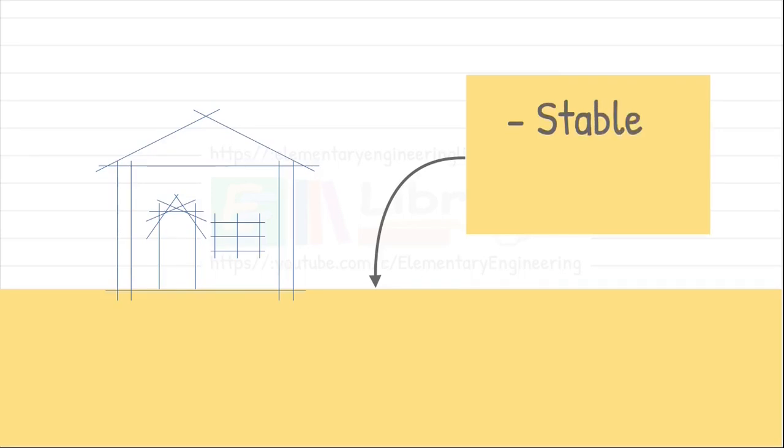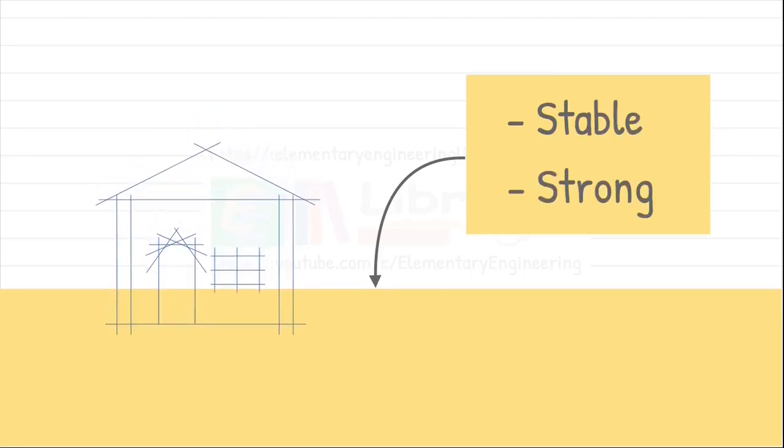Before constructing any structure on the soil, we make the base stable and strong so that it does not settle in large amounts with time. This process of making the soil base solid before the construction of a structure is called compaction.